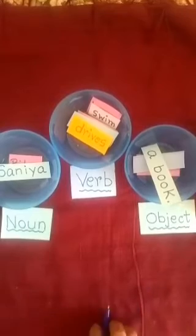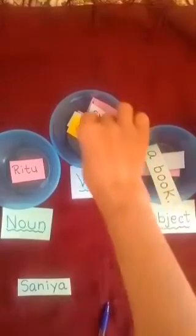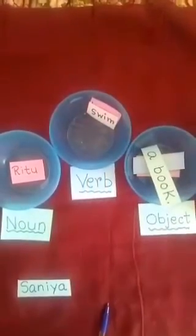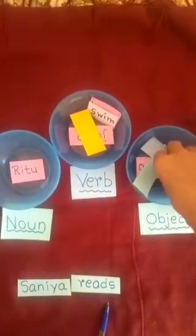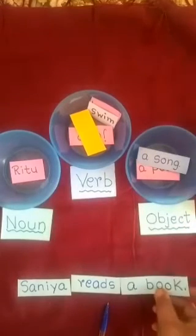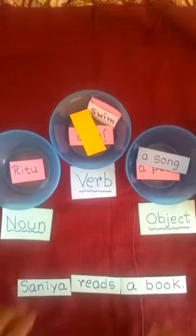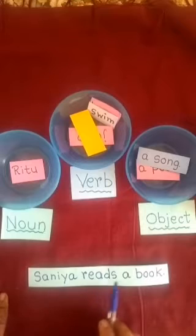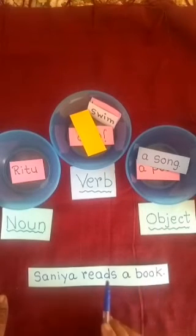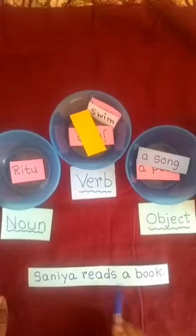Next sentence: Saniya. Let's see the verb — Saniya reads. Reads what? Saniya reads a book. This is the correct sentence. Saniya reads a book. So the verb here is reads, and the object related with the verb is a book.